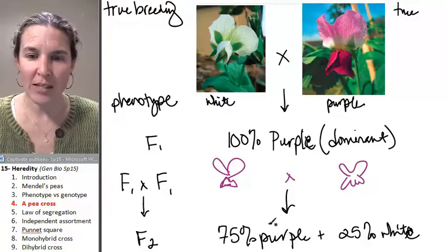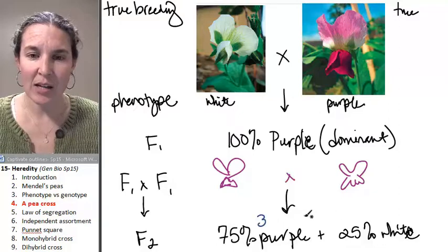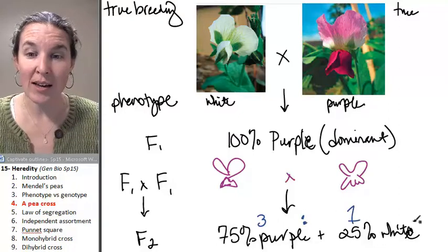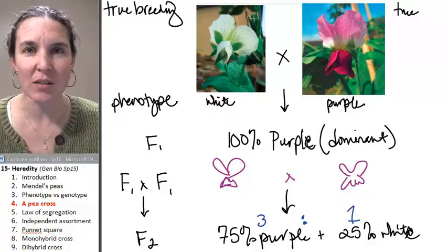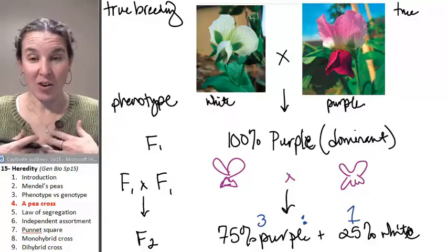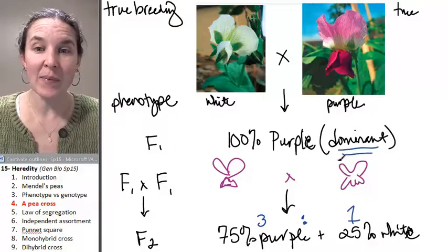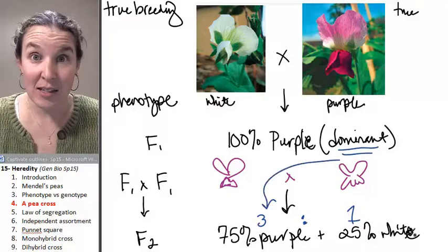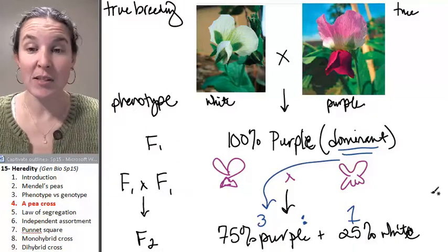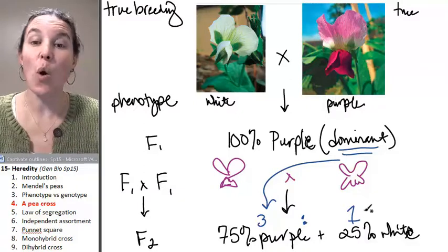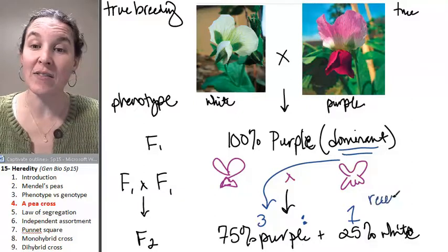In fact, we can call this a three to one phenotypic ratio. We now know that it's three dominant phenotypes in these babies to one recessive phenotype in the babies.